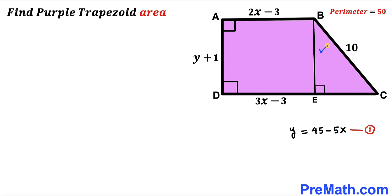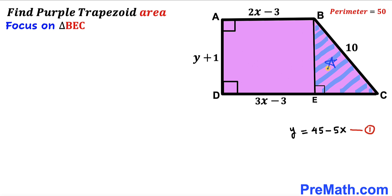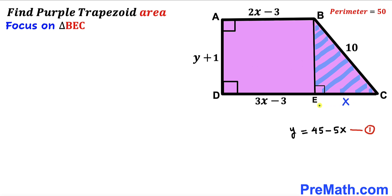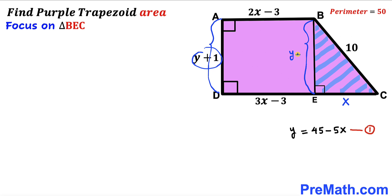Next, I drop a perpendicular BE onto side CD, giving us right triangle BEC. The whole side CD is 3x minus 3, and side AB is 2x minus 3. Subtracting, segment EC equals simply x. Since BE equals AD, and AD is y plus 1, side BE is also y plus 1.